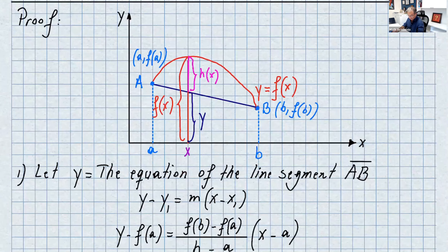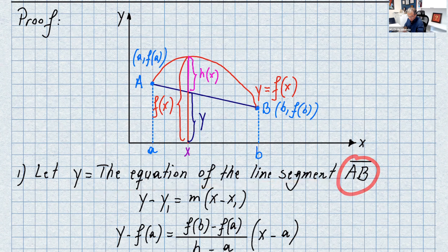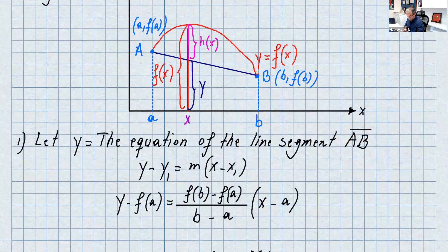The proof of the Mean Value Theorem is very important. Looking at this graph again: the red curve is f(x) and I drew the secant line, which I'll call y. So the secant line is y, and we can define a function h(x) which is the difference between f(x) and y. Let y be the equation of the line segment AB. Using the point-slope formula: y minus f(a) equals the slope of the secant line, which is f(b) minus f(a) over b minus a, times (x minus a).